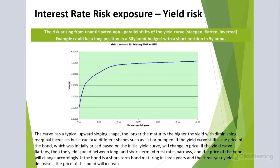If there is an unanticipated non-parallel shift of the yield curve — for example, the curve is steepening, flattening, inverted, or a short-up/short-down scenario — there is definitely some adjustment needed in the hedging strategy in order not to take an excessive position on the EVE side. The risk to which the bank is exposed is EVE volatility — economic value of equity volatility.